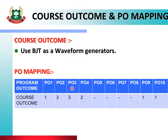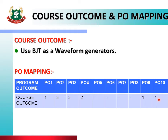PO 3 relates to experiment and practice — we are going to do practicals related to waveform generators, i.e., oscillators — and it is also mapped at level 3. PO 4 relates to engineering tools, as we will need measuring equipment and indicating instruments. PO 10 relates to lifelong learning and is mapped at level 1.